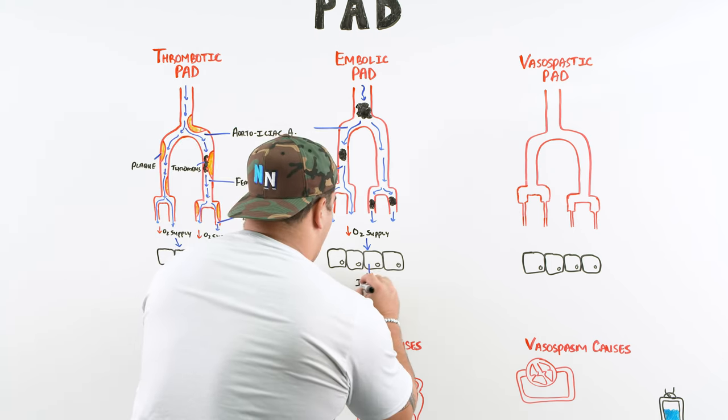Once the ABI confirms PAD, assess the patient for revascularization — indicated for those refractory to medical management, critical limb ischemia, or acute limb ischemia. If the patient has contrast nephropathy risk, use a duplex arterial ultrasound to assess blood flow velocities and locate disease. If there's no contrast risk, angiography — via CT, MRI, or digital subtraction angiography (DSA) — is the better test, showing plaques, occlusions, and emboli, identifying exactly where disease is occurring.